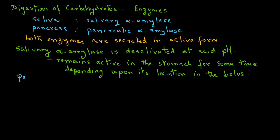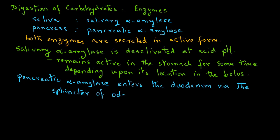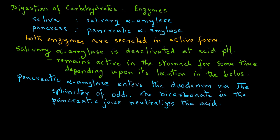The pancreatic alpha-amylase enters the duodenum via the sphincter of Oddi. The bicarbonate present in the pancreatic juice neutralizes the acidic conditions of the digestate after it leaves the pyloric valve and moves into the duodenum.